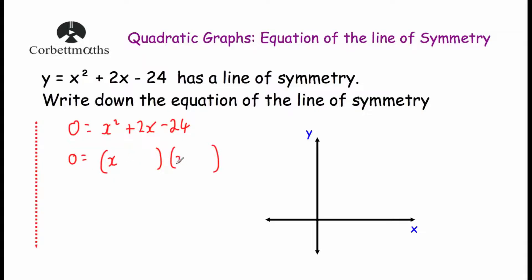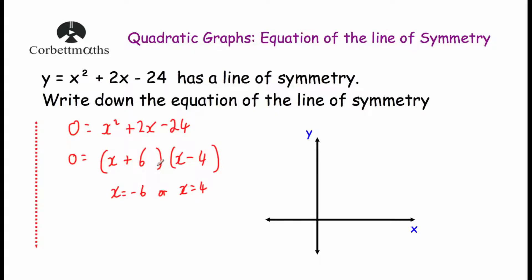We put x at the front of both brackets, and we're looking for two numbers that multiply together to give minus 24 and add together to give 2. Because the product is negative, one number is positive and one is negative. Thinking of 6 and 4: plus 6 and minus 4 multiply to give minus 24 and add to give 2. So the factorised form is (x + 6)(x − 4) = 0, giving x equals minus 6 or x equals 4. So the quadratic crosses the x-axis at minus 6 and 4.